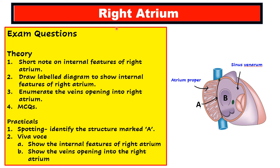The topic of this video is the right atrium and the exam questions asked from this topic. In theory papers they include a short note on internal features of right atrium, a draw-and-label diagram of the interior, and enumerating structures opening into the right atrium. MCQs can also come from this topic. In practical examinations and spotting, you may be asked to identify labeled structures, and in viva voce to show internal features and veins opening into the right atrium.